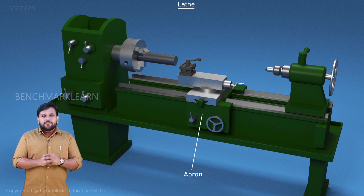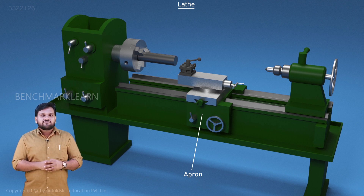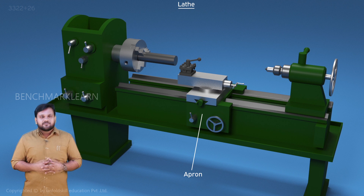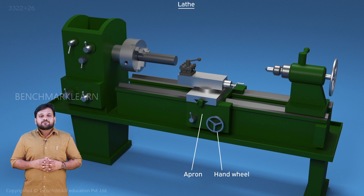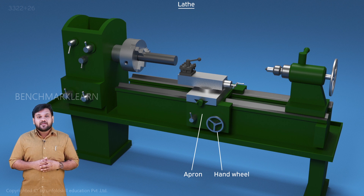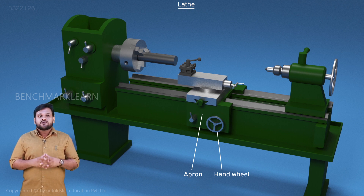The apron is the front part of the saddle and hangs over the front of the bed. It consists of gears, clutches, and levers for operating the movement of the carriage. Hand wheels are provided on the apron to move the carriage and cross slide — when a hand wheel is turned, the carriage slides along the guideways uniformly. The apron also consists of mechanisms for the automatic movement of the carriage.